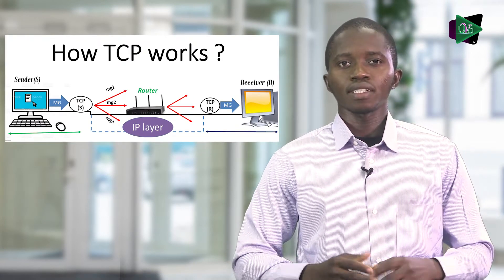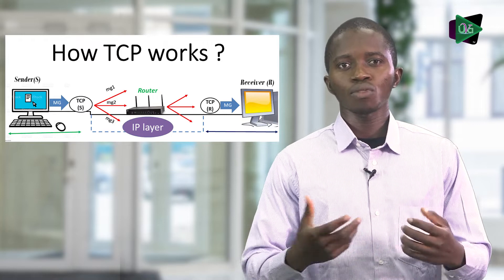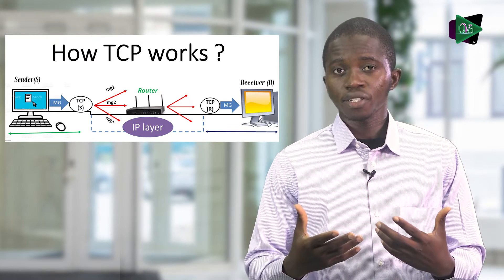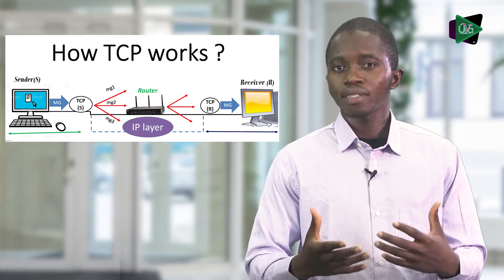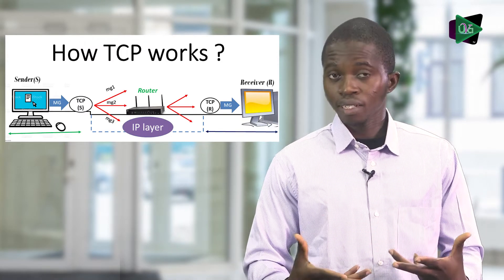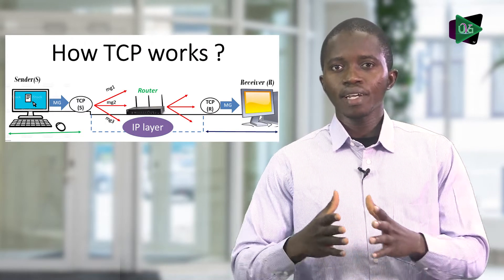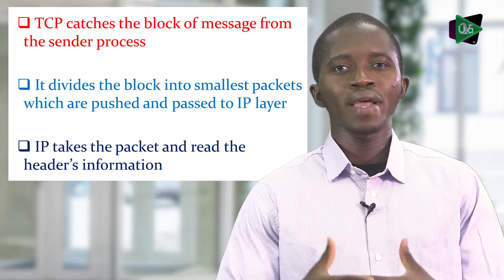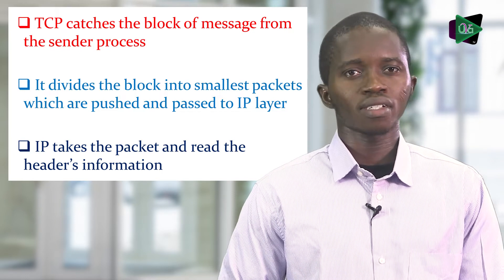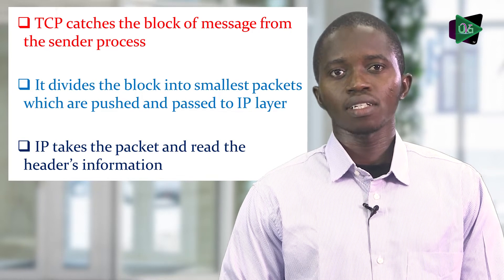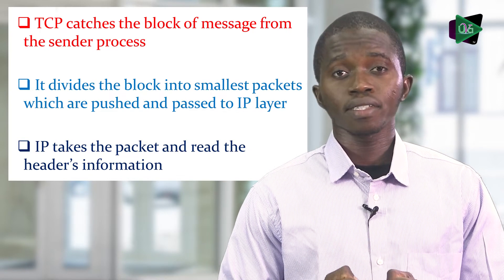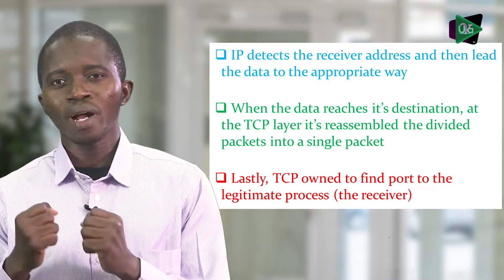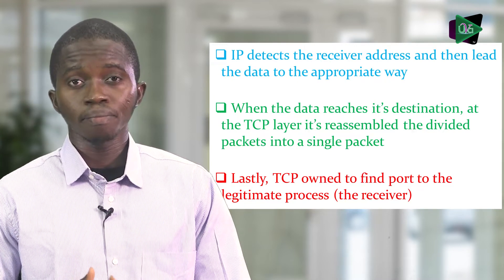Suppose that two processes want to share data from one to another. Being a connection-oriented communication, TCP is implemented on both machines — let's call the sender's TCP, TCPS, and TCPR for the receiver. There is a network plane in the middle that determines the IP layer. When the message is sent, TCPS retrieves the message information in a single block, divides it into small packets, passes the packets to the IP layer, and adds the IP layer on it to discover the right path and forward the data to the destination.